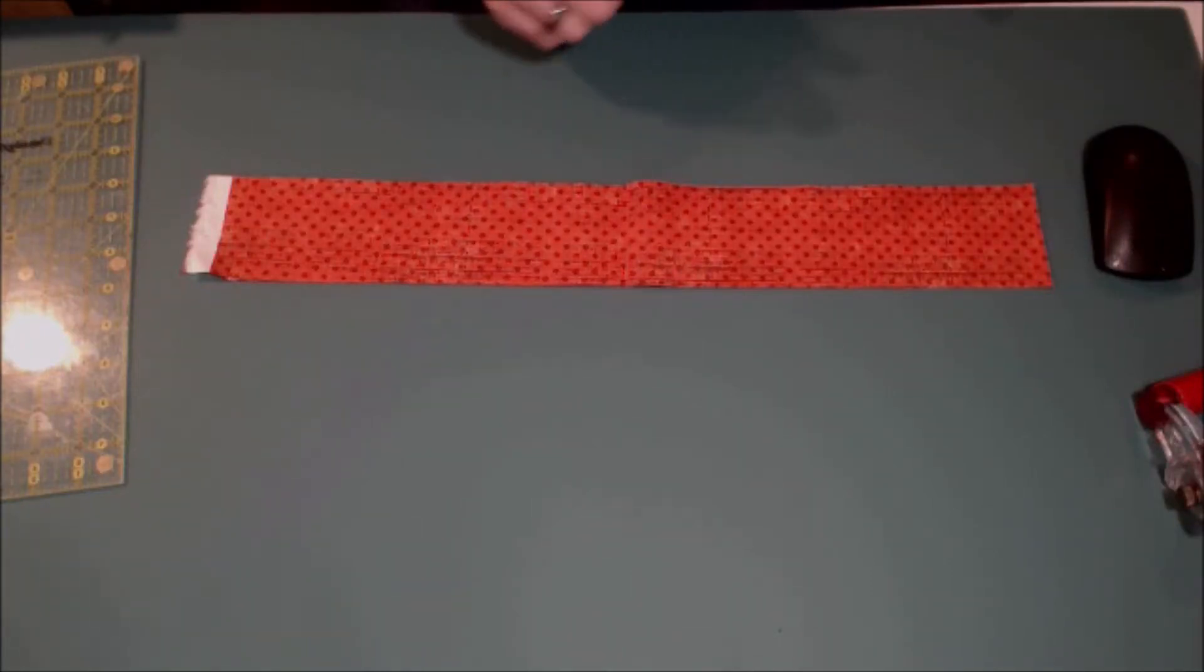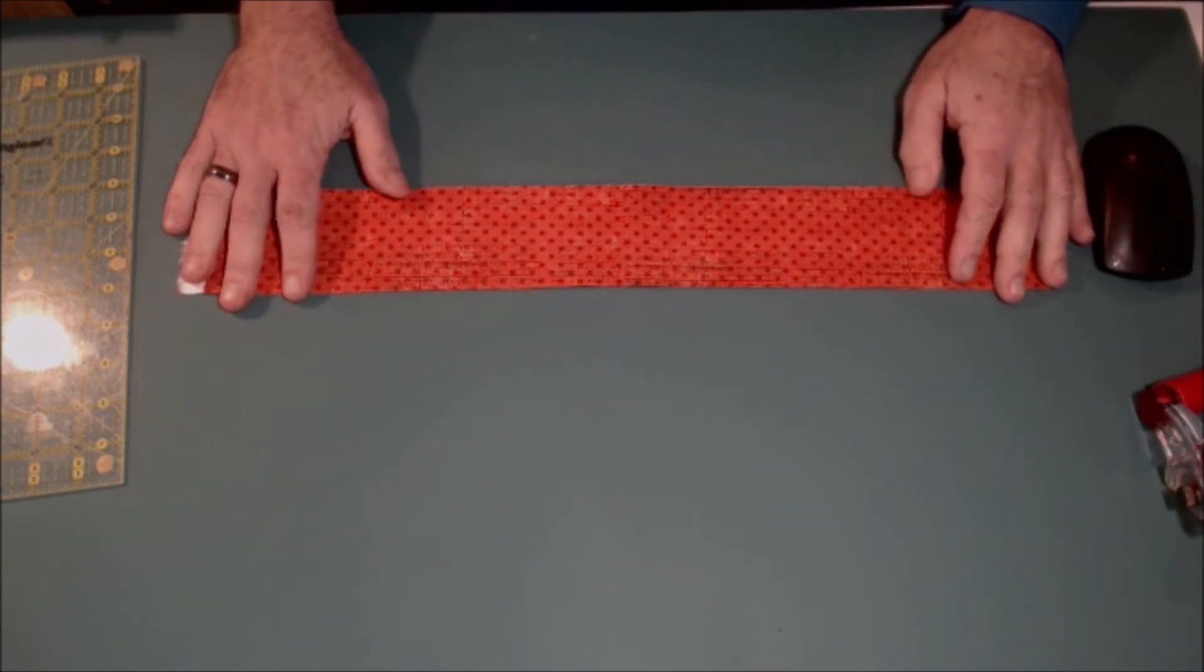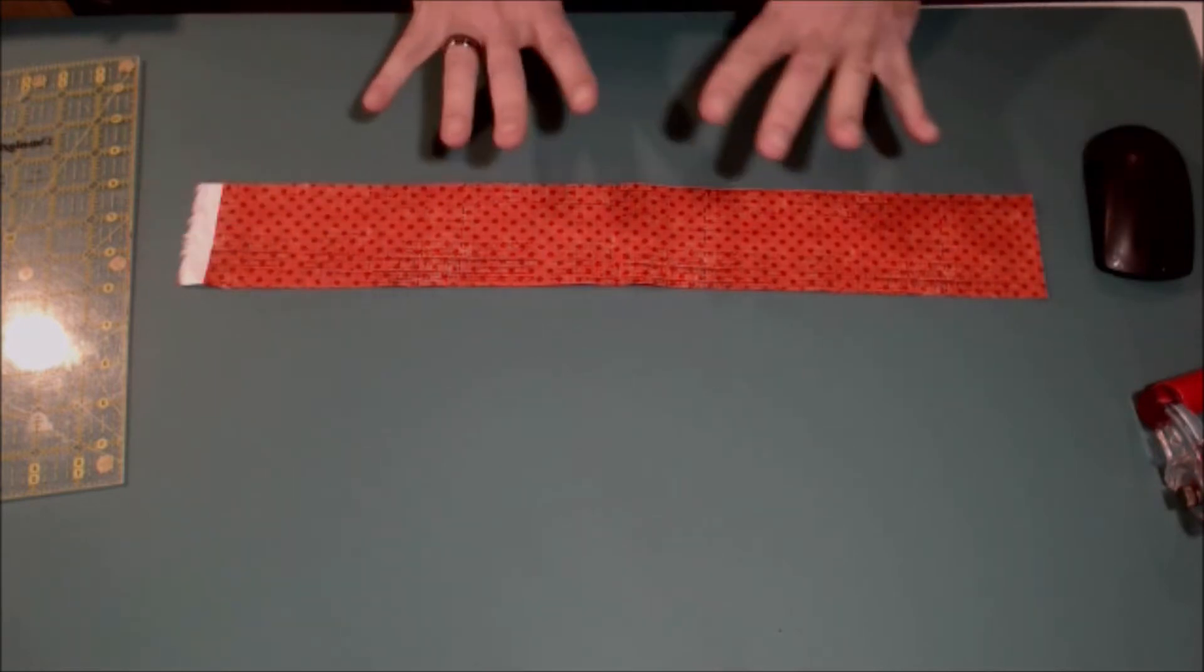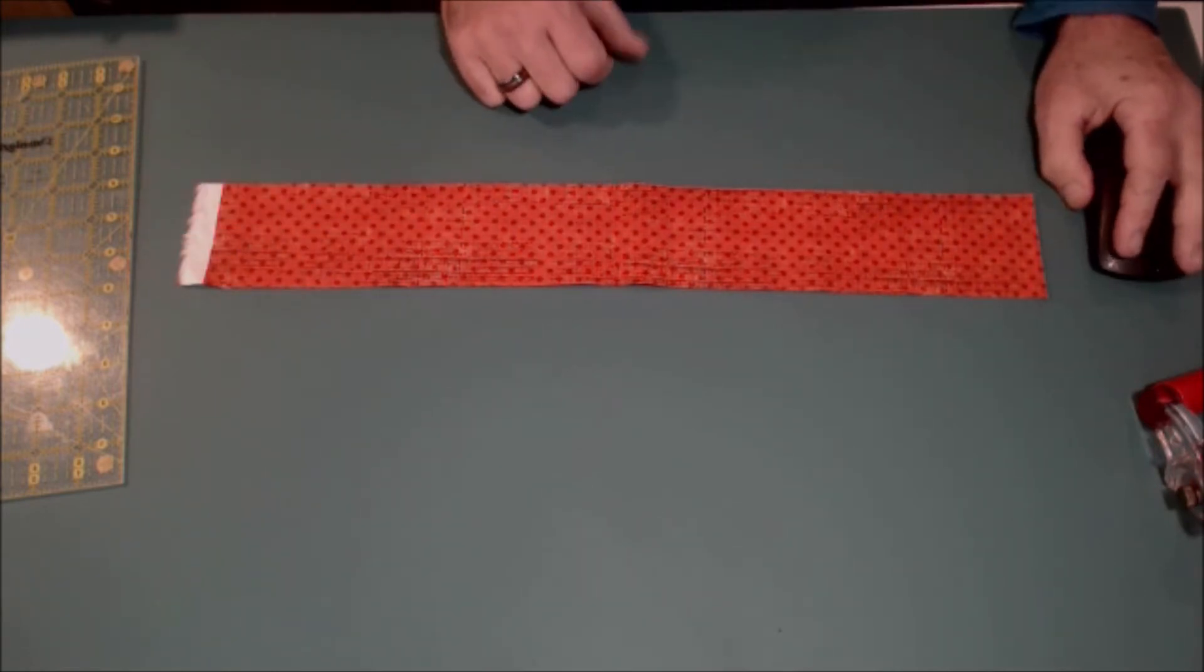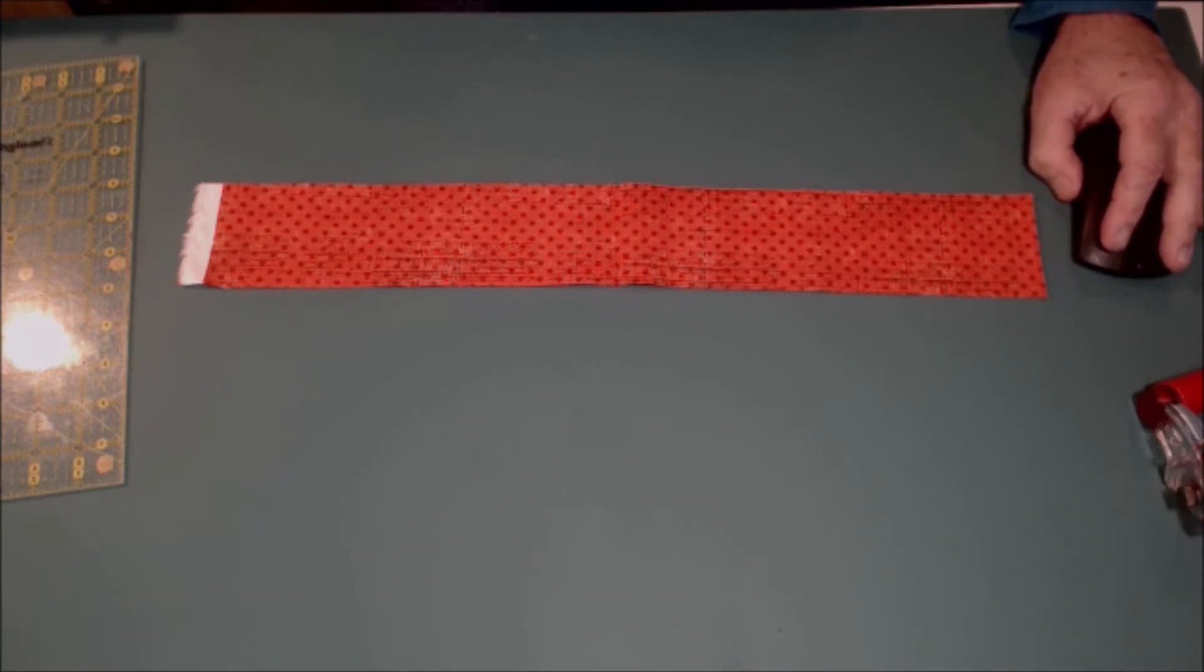Hey there, Quilt Maven Dave here, and I wanted to show you how to cut the irregular triangles for the storm at sea. You need three-inch strips cut into three-by-five-inch rectangles.